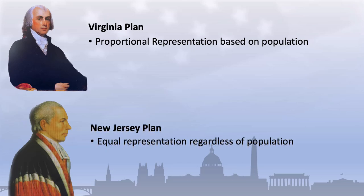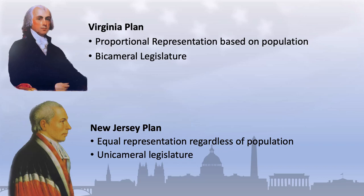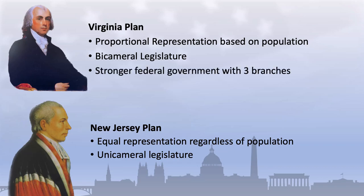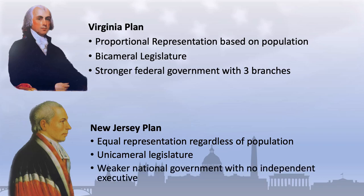There were other important differences between the two plans. The Virginia Plan called for a bicameral legislature with power distributed between the two chambers, while the New Jersey Plan called for all legislative power to be vested in a unicameral National Congress. The Virginia Plan favored a stronger national government consisting of three branches—an executive, legislative, and judicial branch—while the New Jersey Plan called for a weaker national government with no real independent national executive branch. Rather, the executive branch would be selected by Congress, essentially forming a parliamentary form of governance.